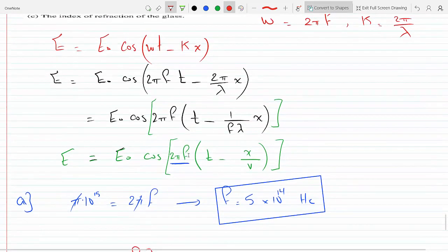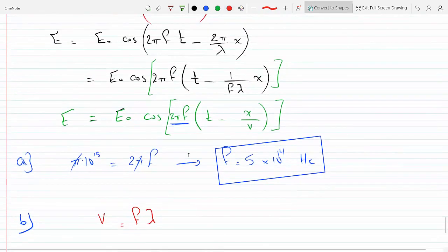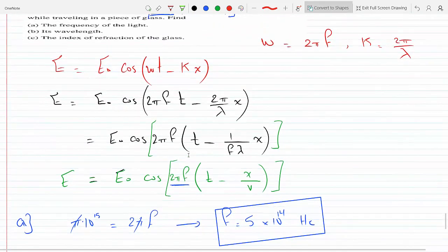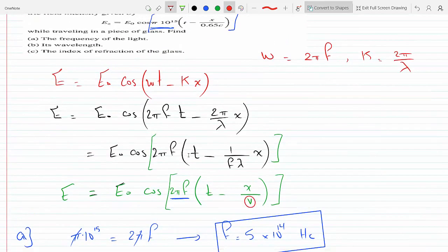This wave doesn't seem to be traveling at the speed of light. And so from the above equation, if I compare this, I know that my V is 0.65c.